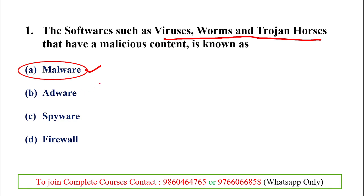Adware and spyware are other important categories of programs that put the computer in danger. Adware causes issues to the device due to excessive advertisements, and spyware includes hacking and other harmful content. The firewall, on the other hand, is the security program that protects against computer viruses.